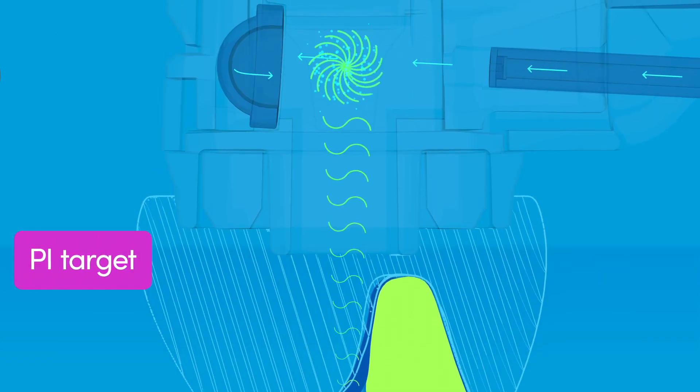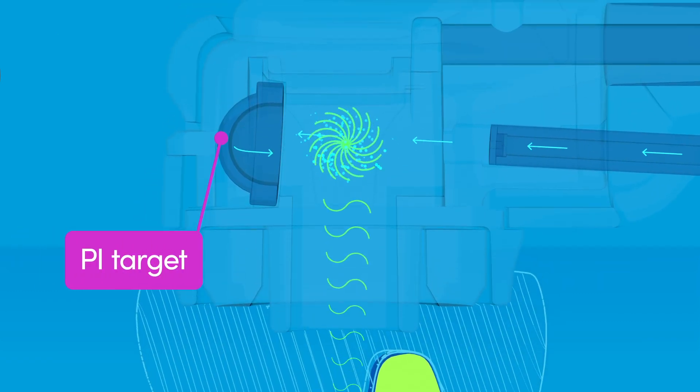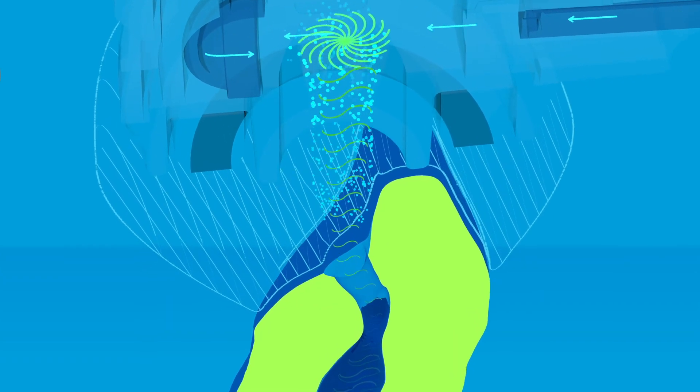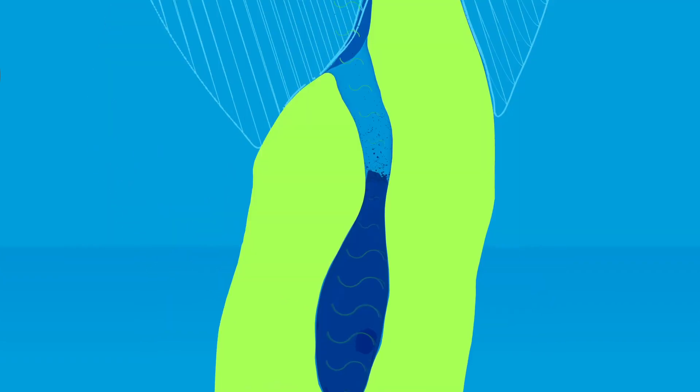At the same time, the fluid jet collides with the target inside the PI and is redirected over the tooth access to generate vortical flow. This creates negative pressure that prevents fluid extrusion and lifts debris and bacteria from within dentinal tubules.